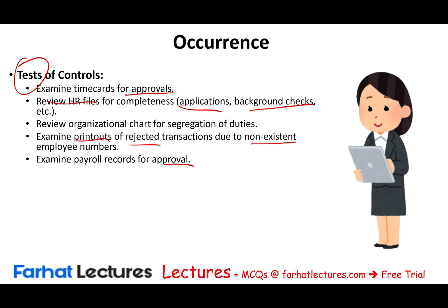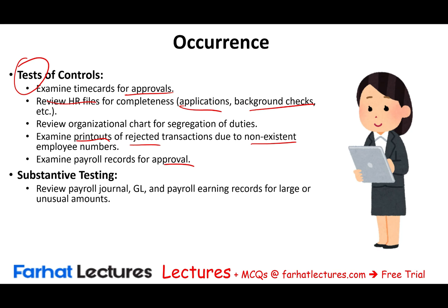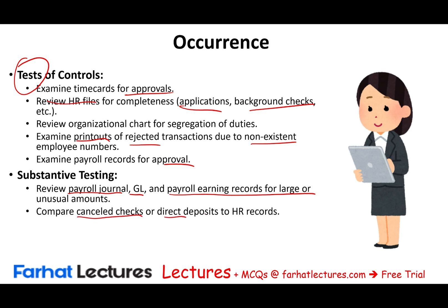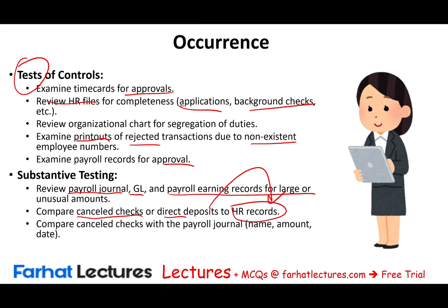For substantive testing of occurrence: review the payroll journal, general ledger, and payroll earnings records for large or unusual amounts; compare canceled checks or direct deposits to HR records to verify money went to people on record; compare canceled checks with the payroll journal for correct name, amount, and date; and examine canceled checks for proper endorsement — confirming that John Doe, for example, is actually endorsing and cashing the check rather than someone else.